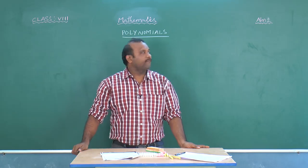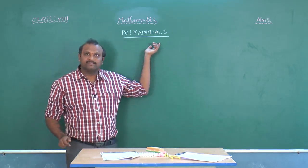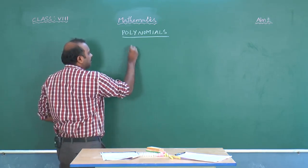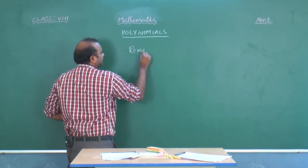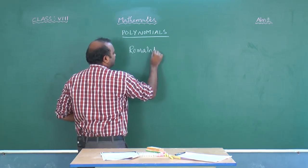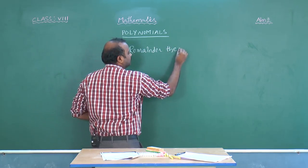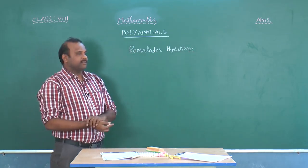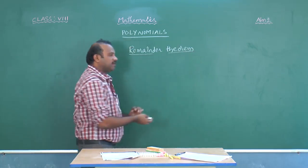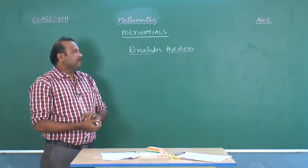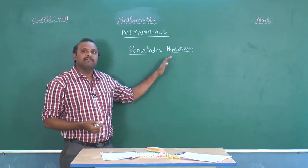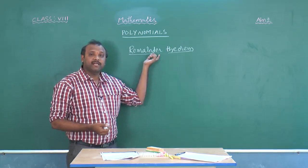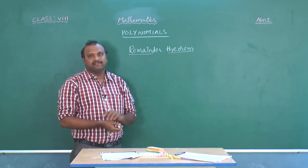Students, in Aim 1 of the Polynomials, we discussed the basic points of Polynomials. In Aim 2, we discuss the Remainder Theorem. So, what is the purpose of knowing the Remainder Theorem? Without finding the actual division, can we find the remainder? Yes, we can find the remainder without actual division by using the Remainder Theorem.